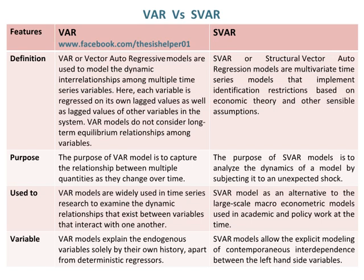VAR models are widely used in time series research to examine the dynamic relationships that exist between variables that interact with one another. Whereas, the SVAR model is an alternative to the large-scale macroeconometric models used in academic and policy work at the time.